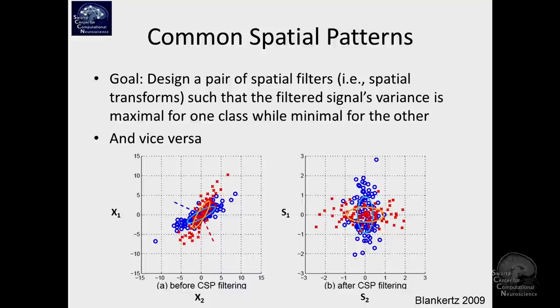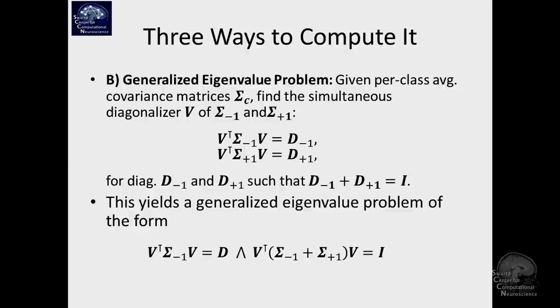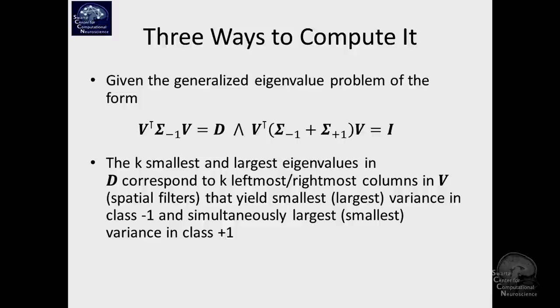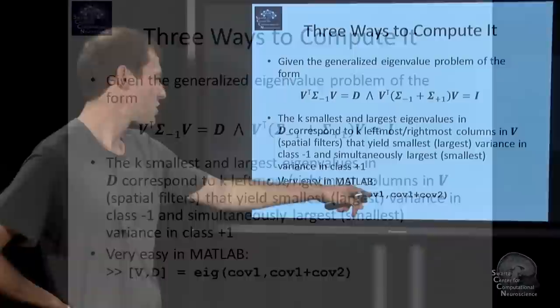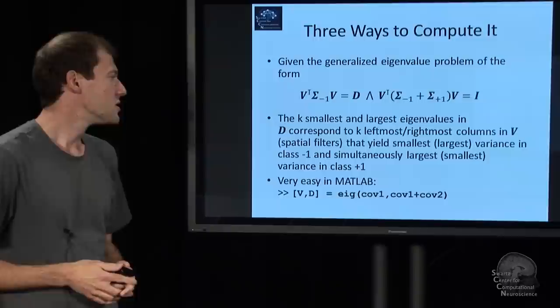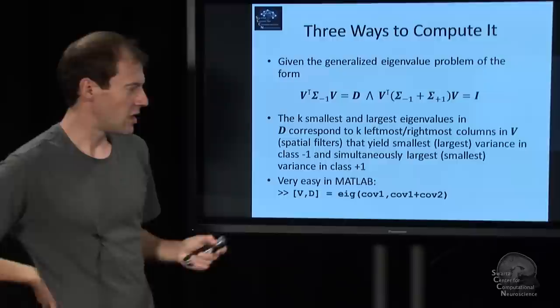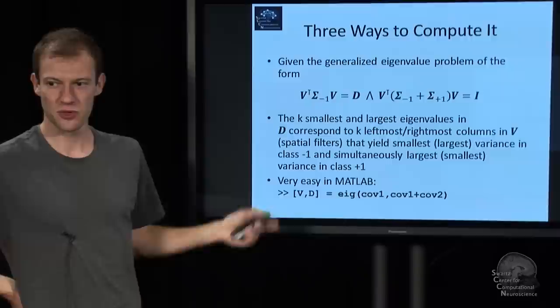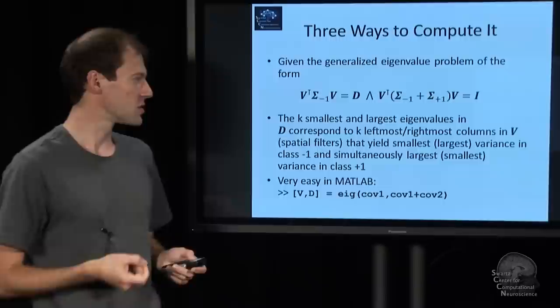There is another way to do it as a generalized eigenvalue problem. That's actually the most efficient way. I will not discuss the math, but I will tell you that you can basically do it in one line in MATLAB. So this is a way to write up generalized eigenvalue problems. It basically jointly diagonalizes this covariance matrix and the average covariance matrix. And out comes eigenvectors and eigenvalues. And these things are actually your spatial filters.